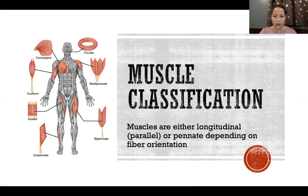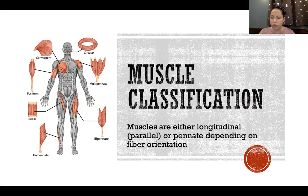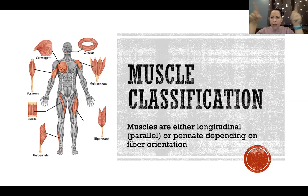Muscles can be classified according to their architecture. Muscles are either longitudinal — also called parallel — or pennate, depending on fiber orientation relative to the axis of force generation. So depending on the angle of the fibers relative to that axis defined by the muscle's attachments, we can classify all of our different muscles.